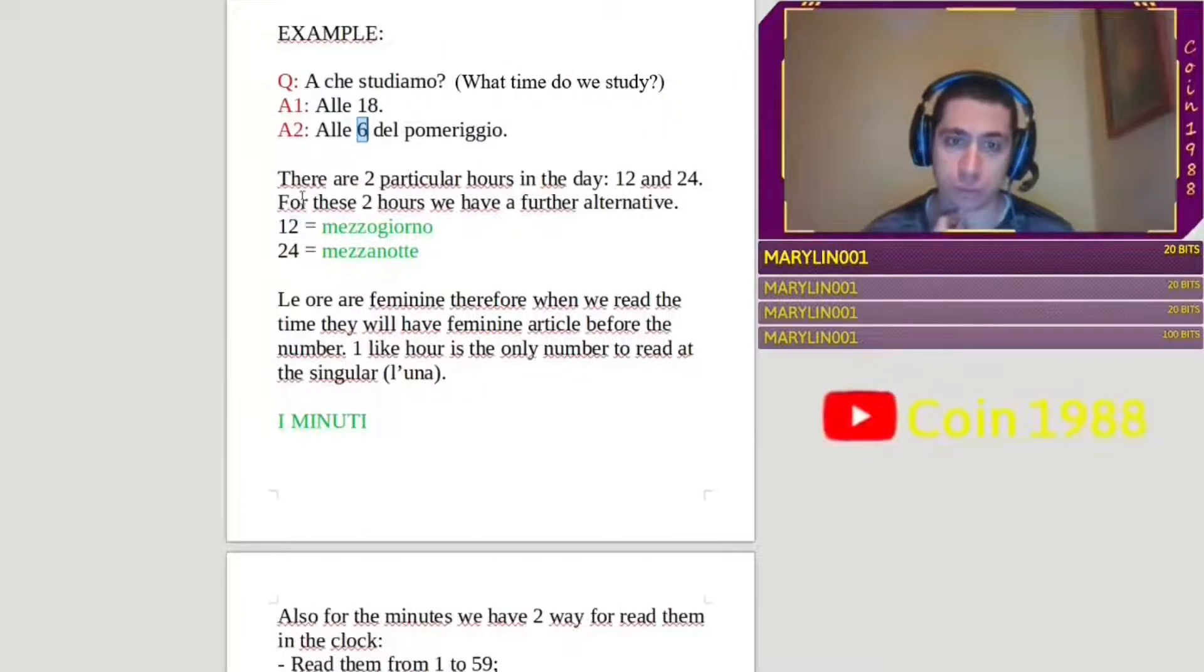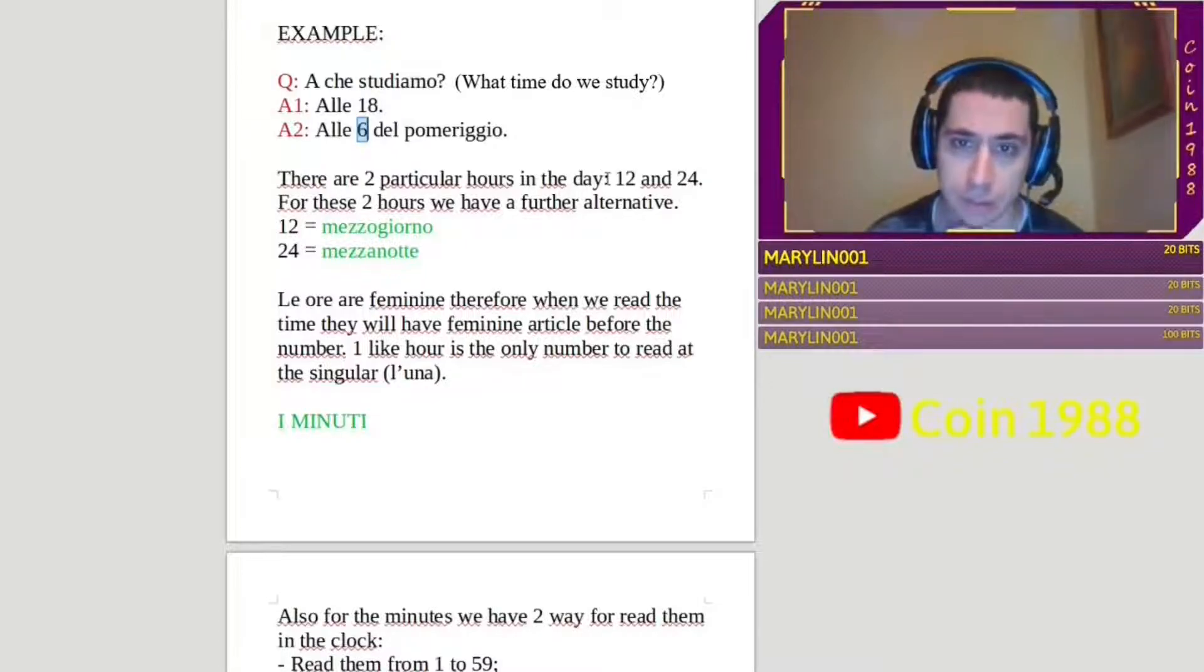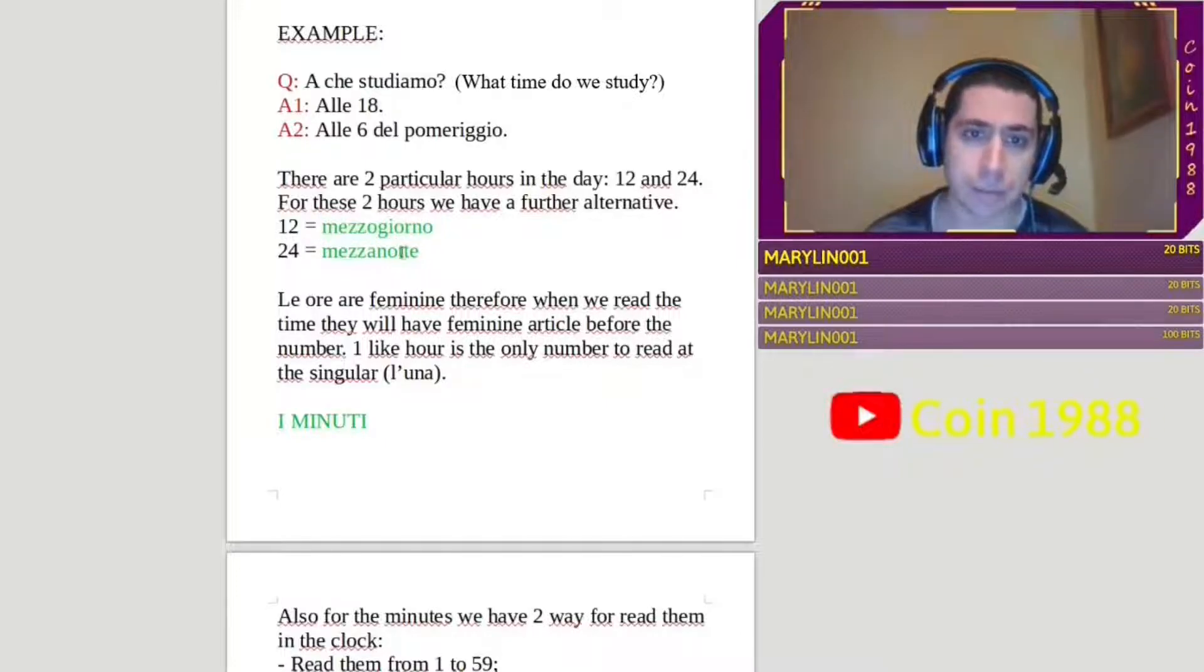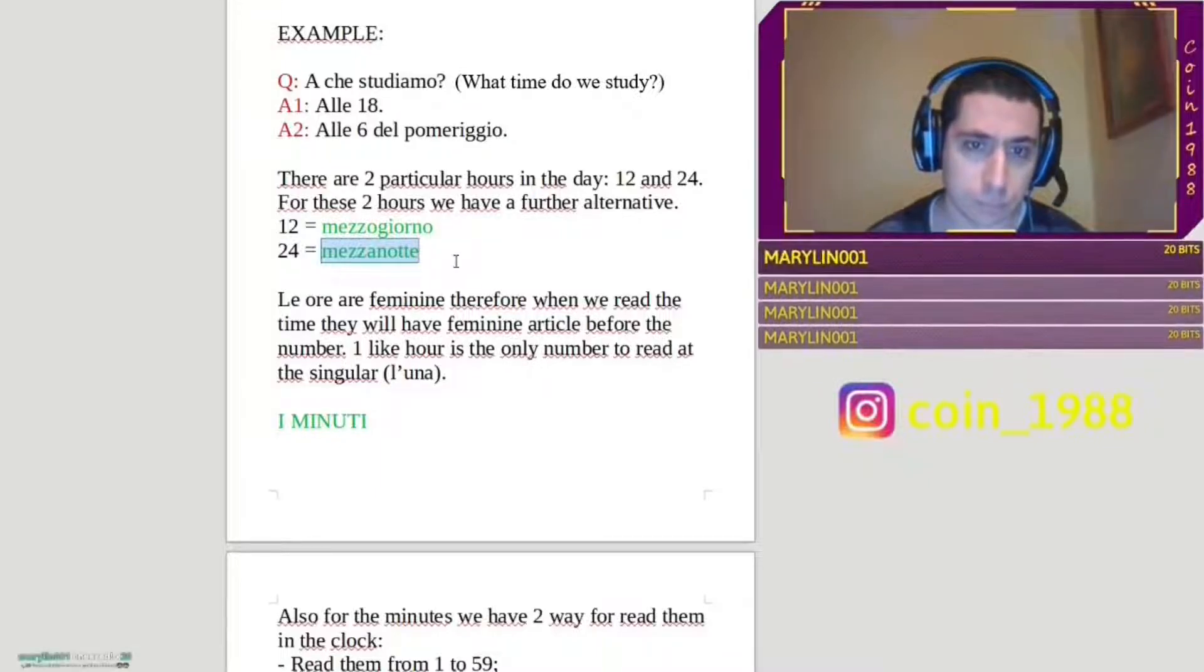Another thing that you need to know, it is that there are two particular hours in the day. They are dodici and ventiquattro. For these two hours, we have a further alternative. So, you can say the number, dodici, or you can say mezzogiorno. Mezzogiorno is only twelve o'clock. Only that. And ventiquattro or zero zero, it is mezzanotte.